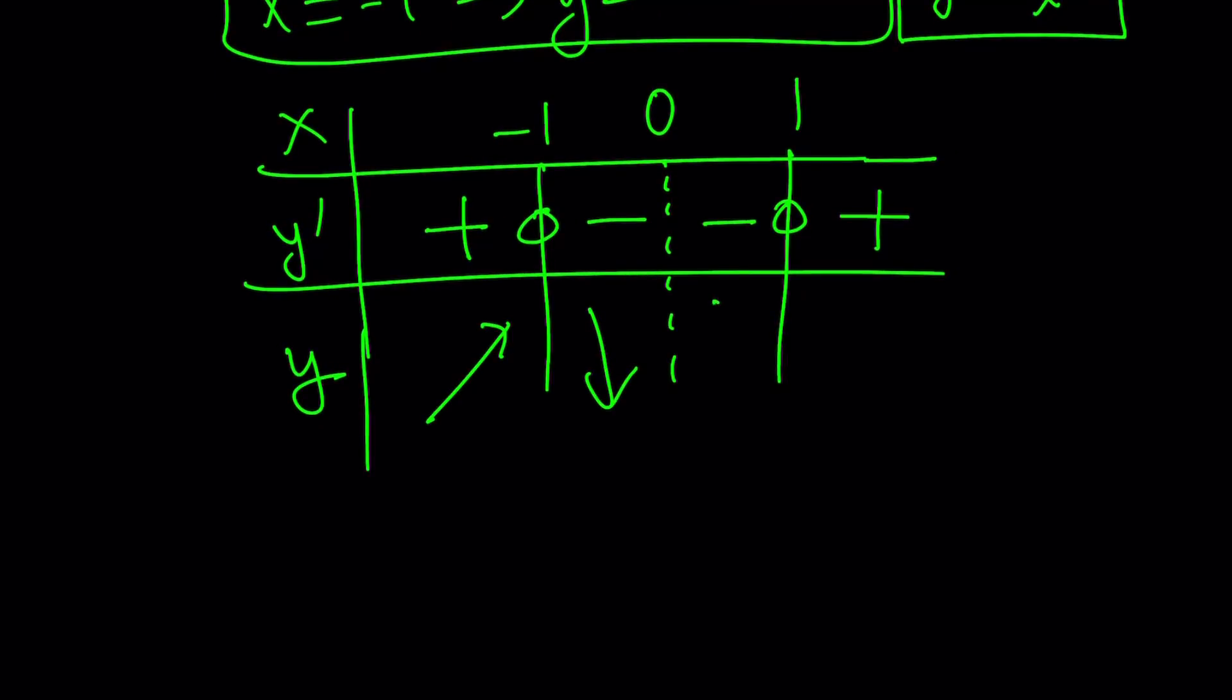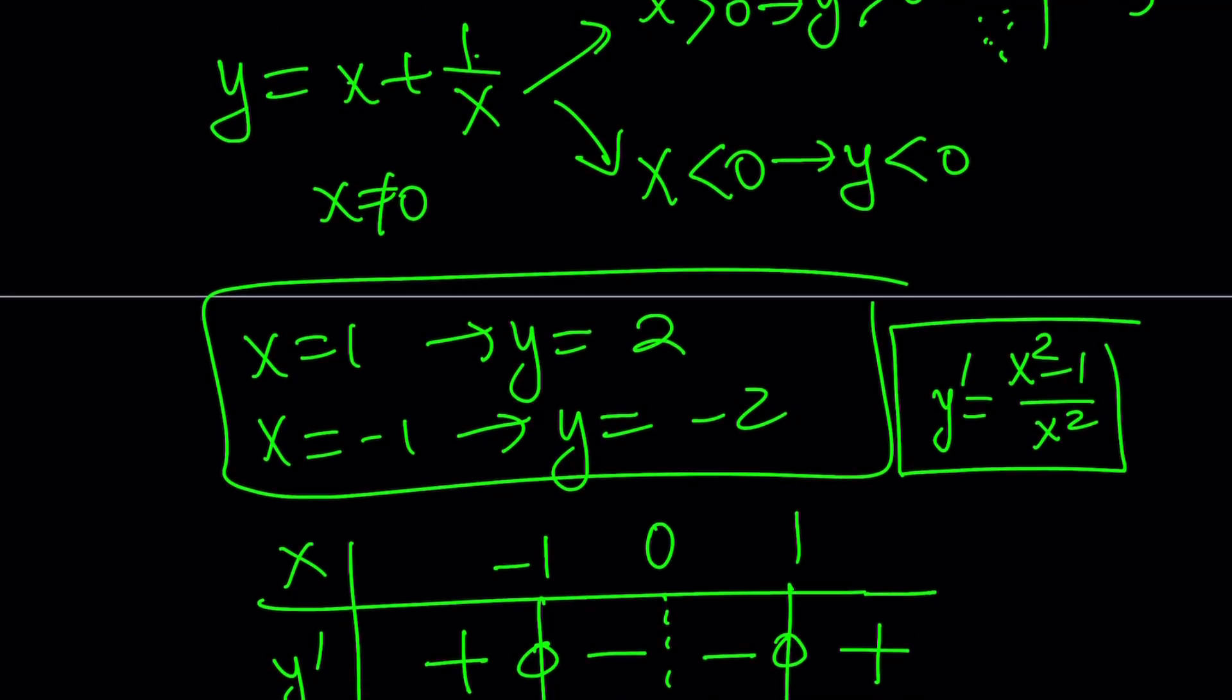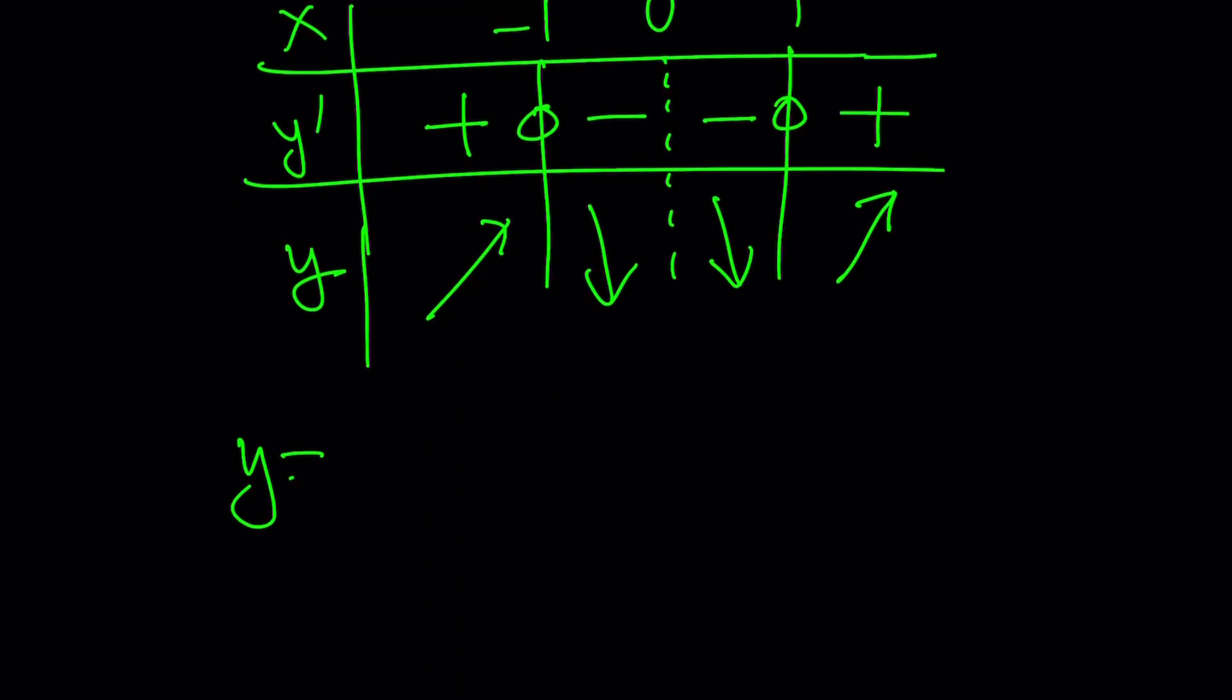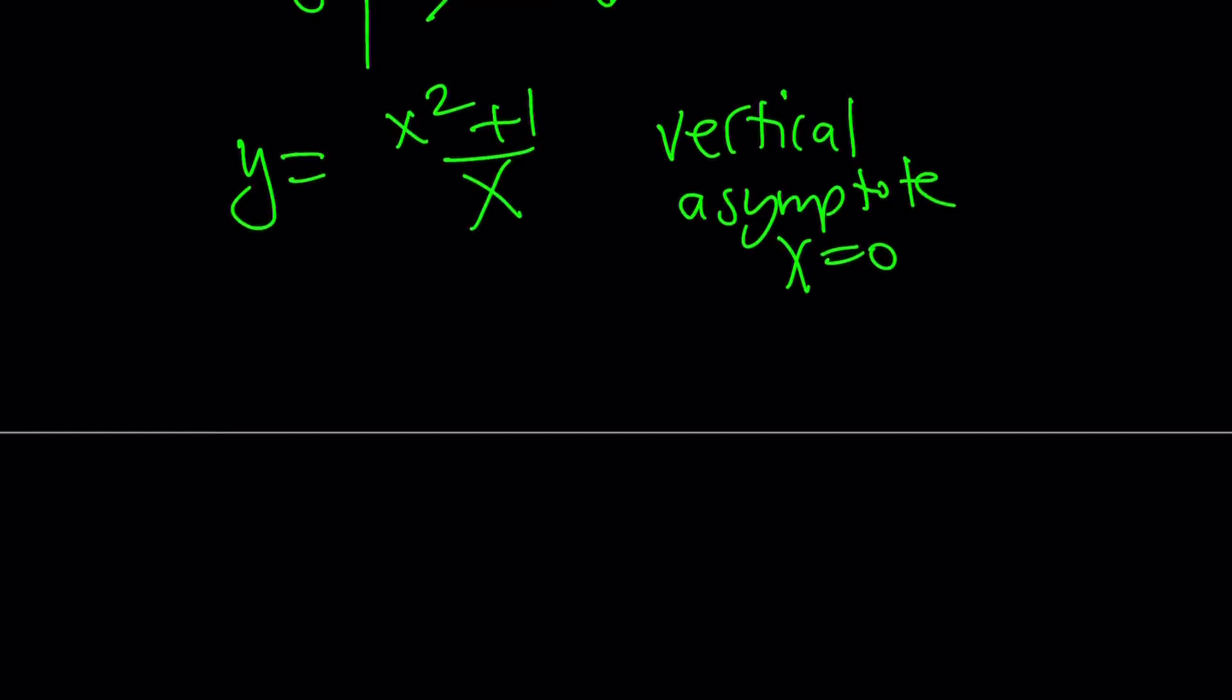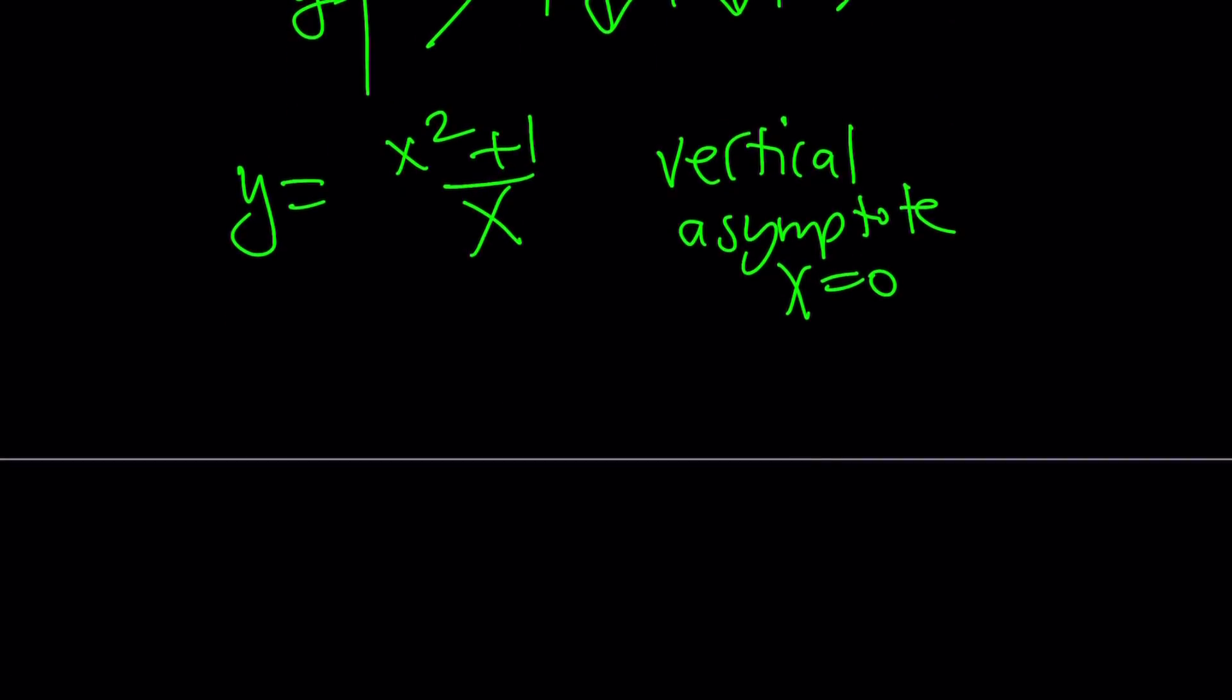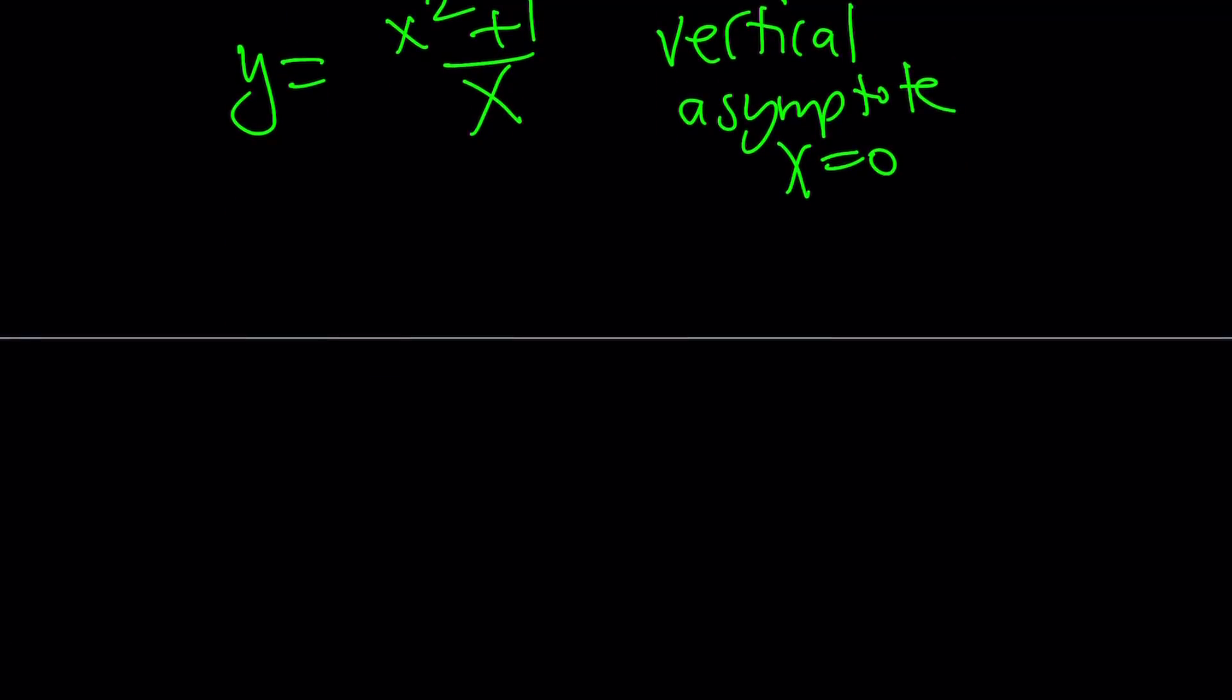And then it is going to be positive again. So this means that our graph is going to increase and then decrease. And then it's going to decrease and then increase. But notice that there's going to be a gap. And actually, what we have at 0, let me rewrite our function, the original one, we have actually a vertical asymptote.